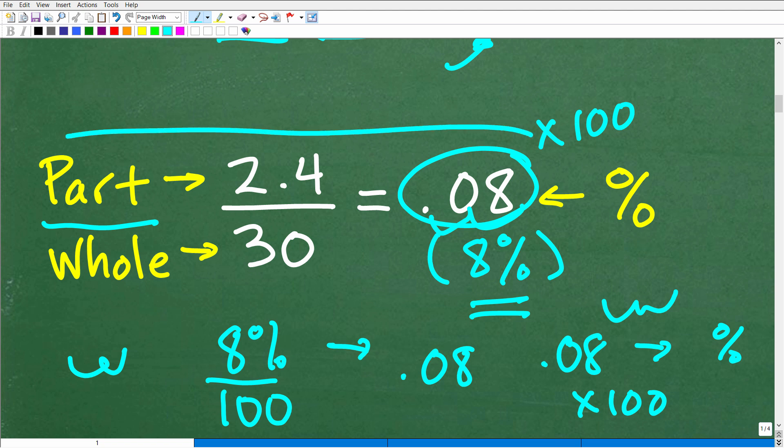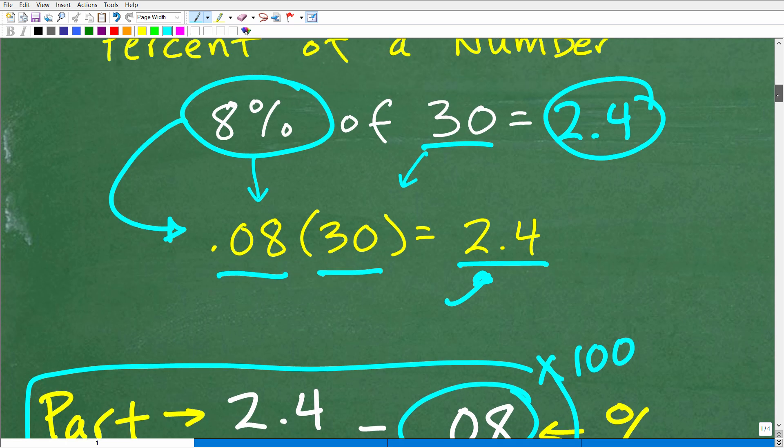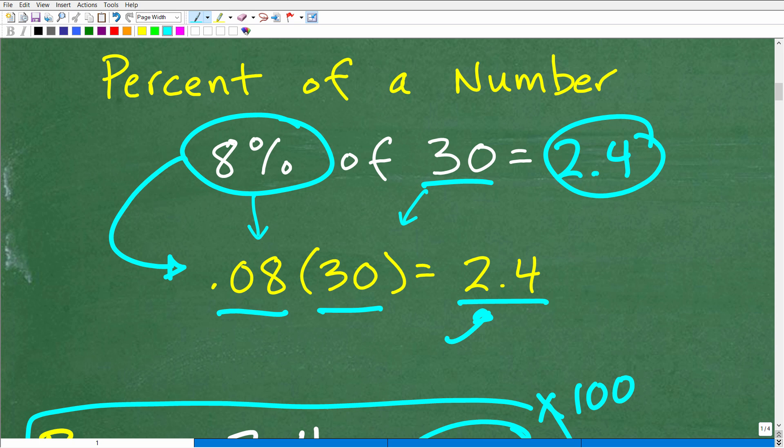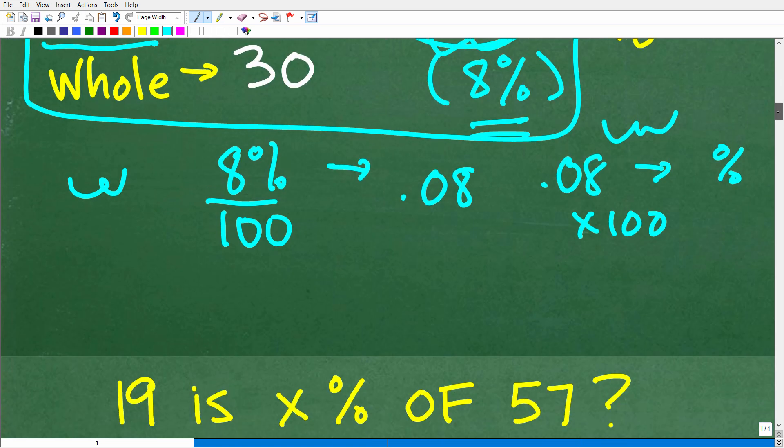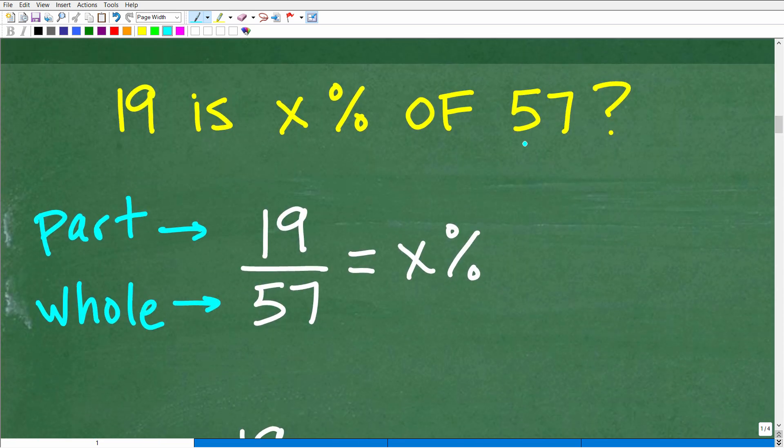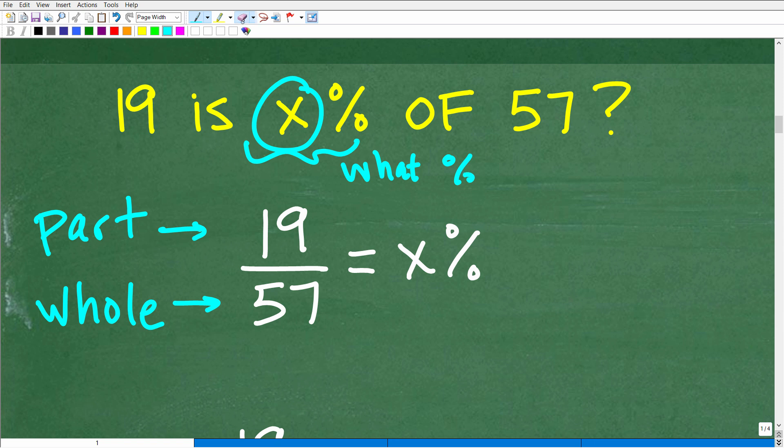So it's important that you understand this model or perception of percent scenario. We're trying to find percent of a number: 8% of 30 is 2.4, or 2.4 out of 30 is 0.08, which of course is 8%. Now let's get into our problem. 19 is X percent of 57. What is X? Well, X is just an unknown value. Another way we can state this is 19 is what percent of 57. Don't let these variables confuse you. You interpret the problem. So 19 is what percent of 57, or 19 is X percent of 57.